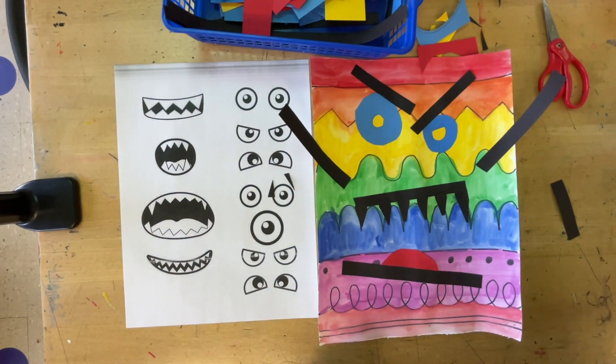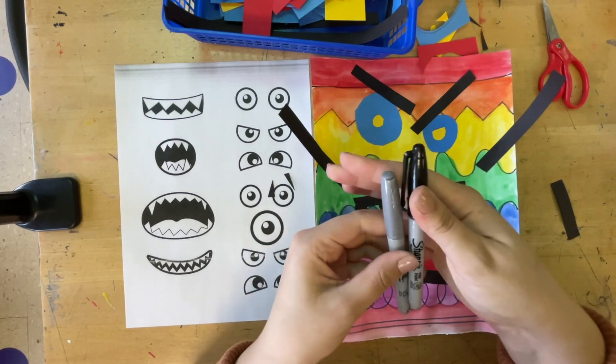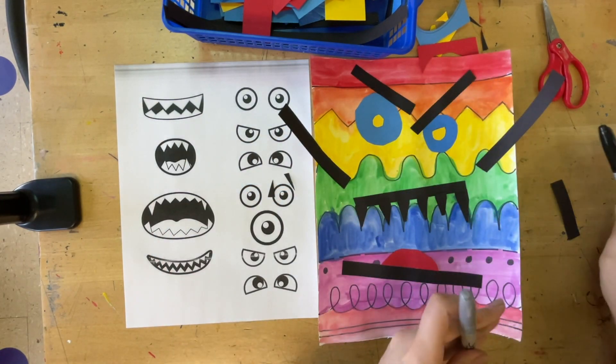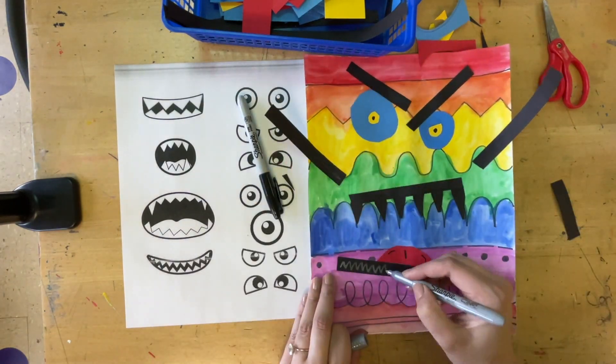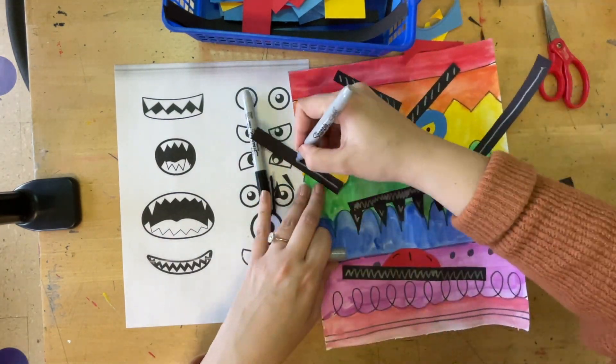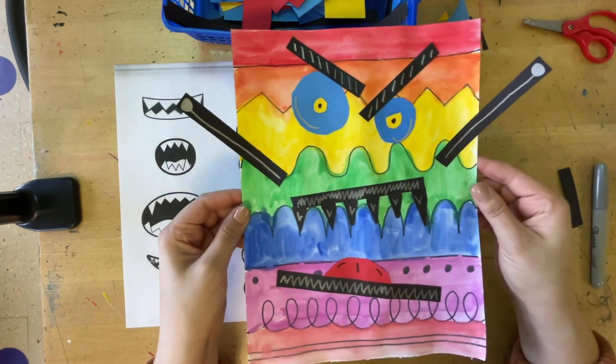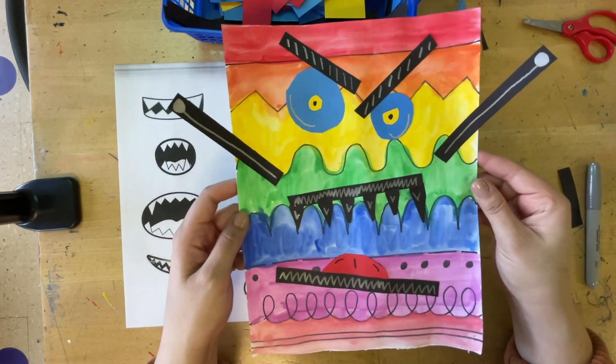As one last and final step, I'm just going to use my metallic sharpie and my black sharpie to add details throughout my entire monster. Perfect. And my monster is all done. I want to put him right in the drying rack to make sure he's fully dry before he goes home.